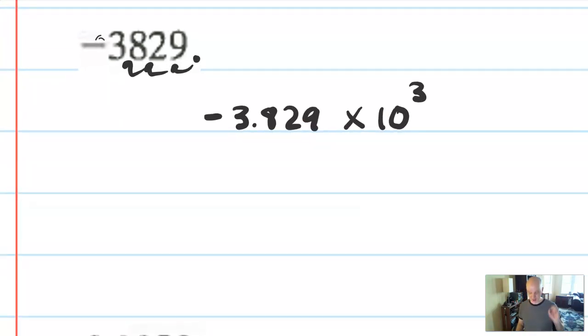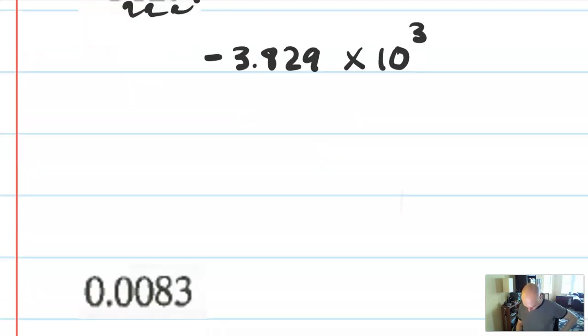So, it's going to be negative 3.829 times 10 to the positive third because it went three places over. So, think about where the decimal moves, count the moves, and then you can write it in that notation.